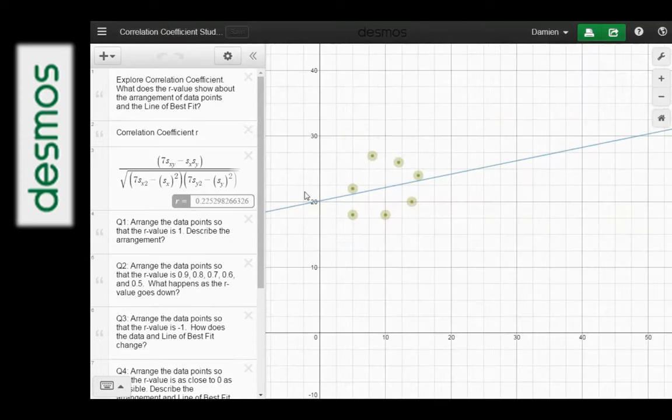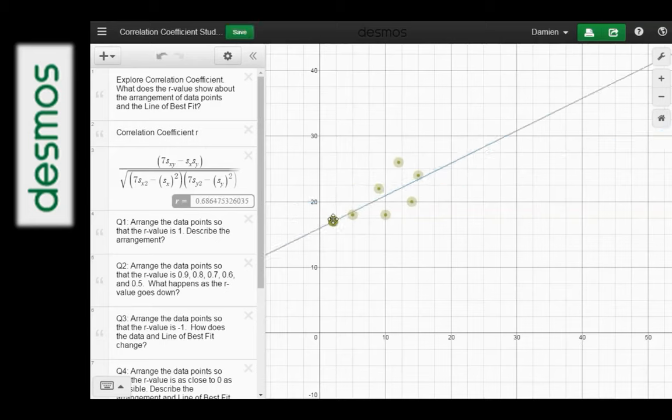You can also use Desmos to explore concepts in statistics. So here we have seven points and as they're arranged closer and closer to a straight line you can see that the correlation coefficient r on the left hand side is getting closer and closer to one. So this can be used to explore scatter diagrams.